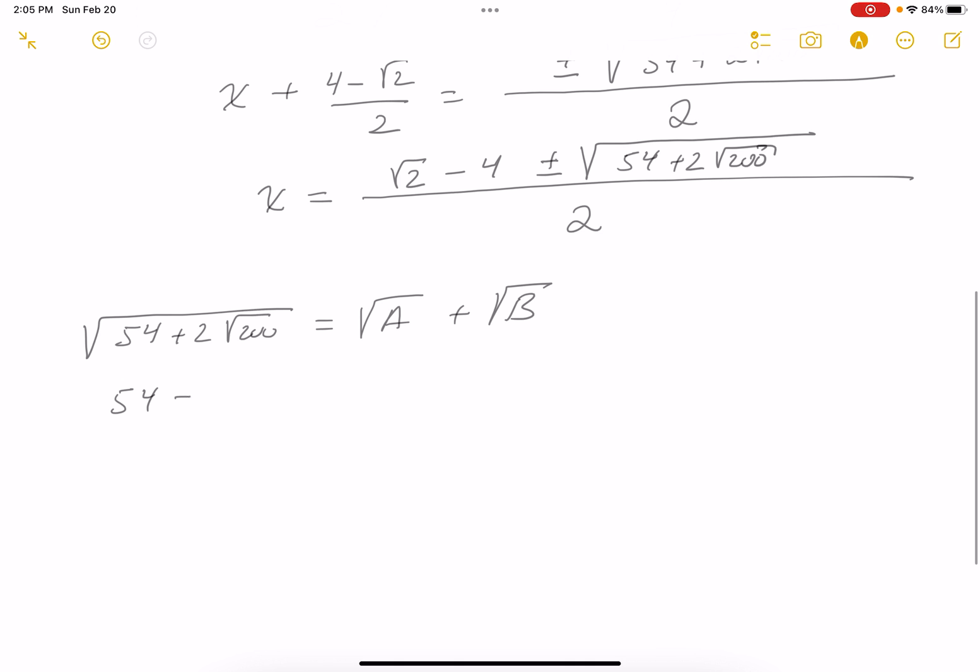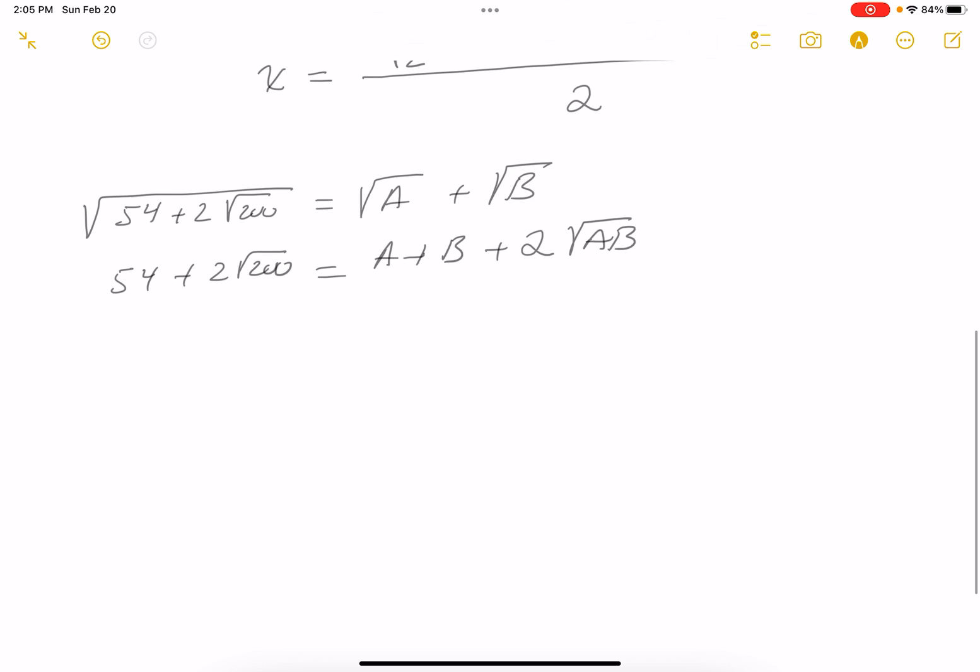Square both sides. You get 54 plus 2 times the root of 200 equals A plus B plus 2 root AB. And then I'm going to equate things. So I'm going to say A plus B is 54, and A times B equals 200. These things often can be maddening to look at them and say, I wonder if I can do that. Well, I think I'm seeing it. So I'm thinking I'm seeing that it's 50 times 4, because 50 times 4 is 200, and 50 plus 4 is, in fact, 54.